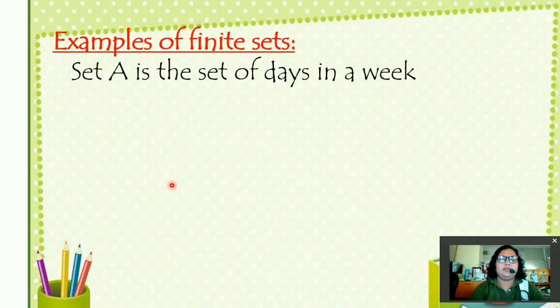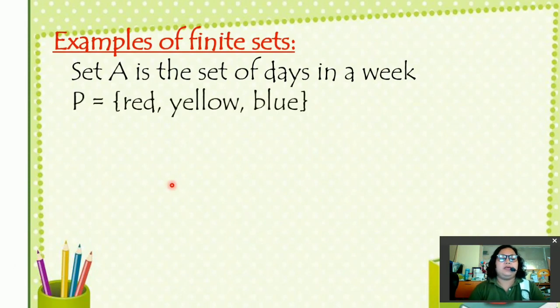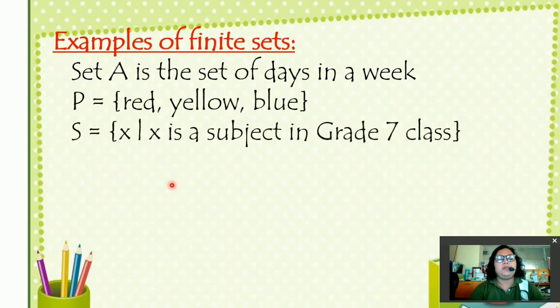Examples of finite sets. Set A is a set of days in a week. How many elements? We have 7 days or 7 elements. Set B, red, yellow, and blue. Can we count the elements? Yes, we have 3 elements. Set X is a set of X such that X is a subject in grade 7 class. It can be counted depending on the curriculum you are enrolled. If you are enrolled in a regular class, you have 8 subjects. But in a special class, you have 10 subjects.